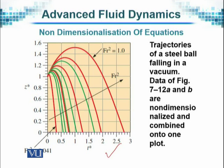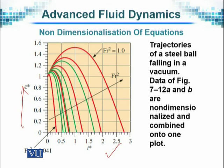The trajectories of a steel ball falling in a vacuum are non-dimensionalized. You can see how the picture looks — how the speed and the fall behave when the Froude number is small or increasing. Similarly, you can see what happens as the non-dimensional height increases, and the time is also non-dimensional. These things change in a clear, organized way as the Froude number increases.